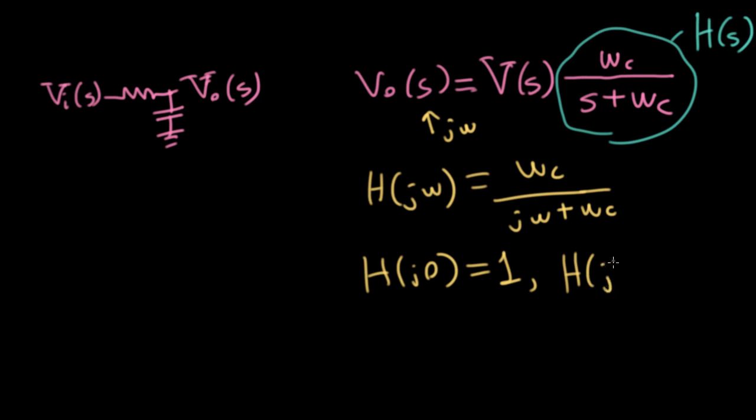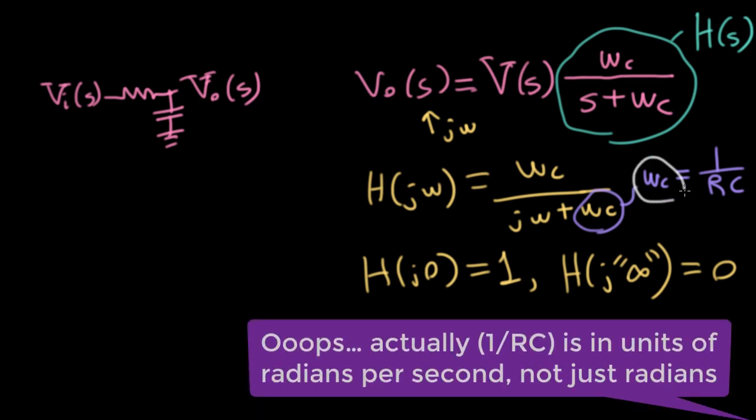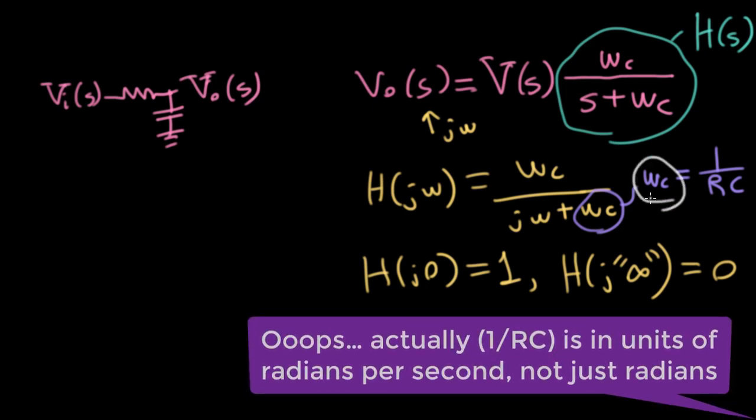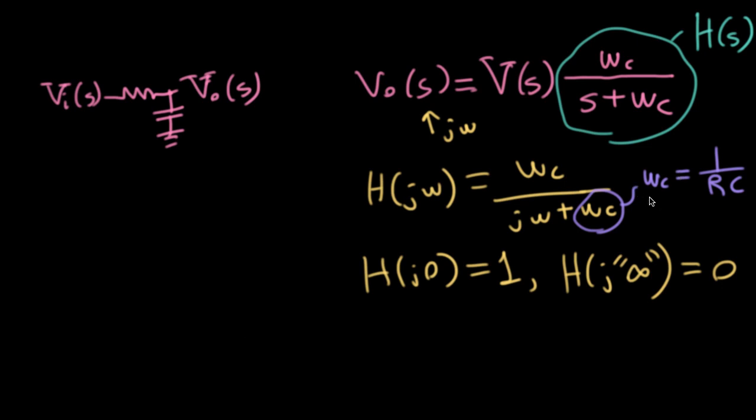But if we were to plug in infinity, which I'm putting here in quotes, and by this what I mean is as omega goes to infinity, but I'm being a little informal here, we get zero. Also this omega c, which is equal to 1 over RC, is the half power cutoff point. And I should remind you that omega c here is in terms of radians. So if you want it in terms of hertz, you need to divide by 2 pi. So that was just a review of what we discovered last time.